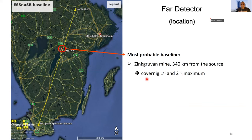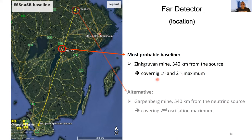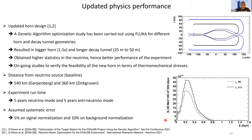The 340 km baseline covers the first and second oscillation maxima, while we have an alternative site at the Garpenberg mine at 540 km, covering only the second oscillation maximum. Recently, improvement studies led to an update of the physics performance, including a genetic algorithm optimization using FLUKA on the decay tunnel. The genetic algorithm results show a preference for larger horn and decay tunnel size, improving flux statistics.